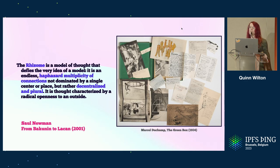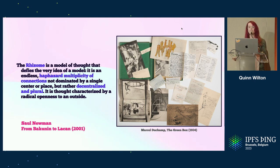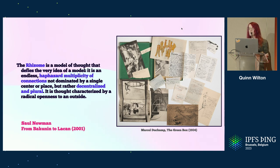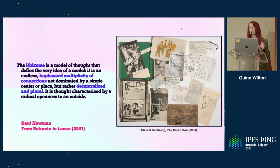The rhizome is a model of thought that defies the very idea of a model. It is an endless, haphazard multiplicity of connections, not dominated by a single center or place, but rather decentralized and plural. It is thought characterized by a radical openness to an outside. In this way, to be rhizomatic is to be non-hierarchical, to be dynamic, to eschew totalizing ideas and schemas, and to fully embrace heterogeneous connection.